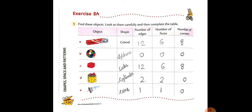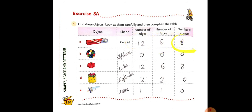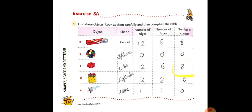Now Exercise 8A: Find these objects, look at them carefully, then complete the table. Object diya hai — shape likhna hai, number of edges likhna hai, number of faces likhna hai, number of corners likhna hai. Sabse pahle: box — cuboid; cuboid ki edges hoti hain 12, faces hote hain 6, aur corners hote hain 8. Phir sphere: 0 edges, 0 faces, 0 corners. Cube: 12 edges, 6 faces, 8 corners. Aise cylinder aur cone aapko apne khud se karna hai.